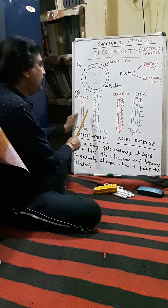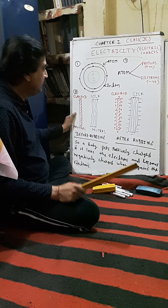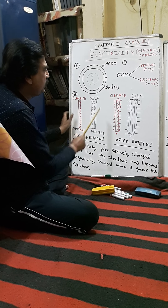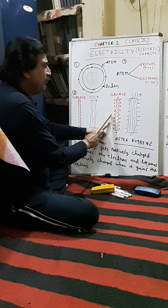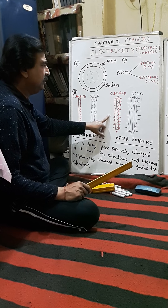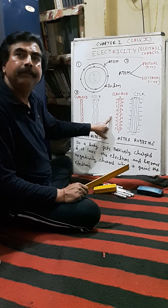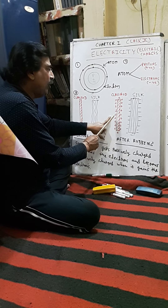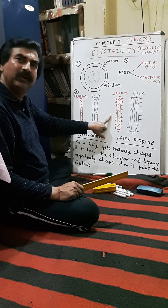This glass rod should be rubbed with the silk cloth. What happens? Some of the electrons from the glass rod will be transferred to this silk cloth. When some electrons transfer from the glass rod to the silk cloth, after losing electrons, the glass rod will become positively charged because there is a deficiency of electrons on it.